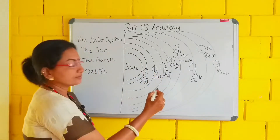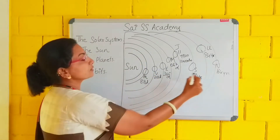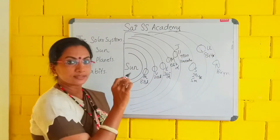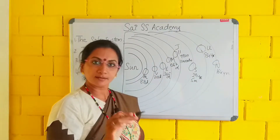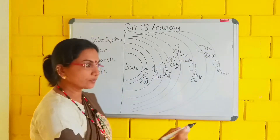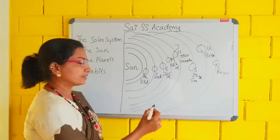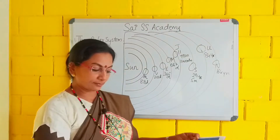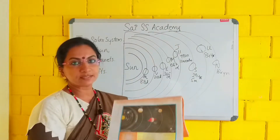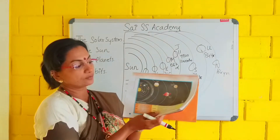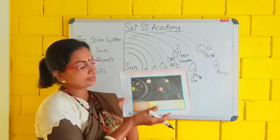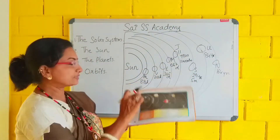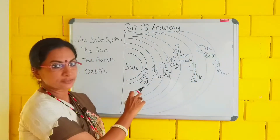This is the solar system. I said the sun and the 8 planets are there in the solar system. In our textbook, page number 3, the picture is there — the solar system and the orbits, everything is there. So this picture I am going to explain here.